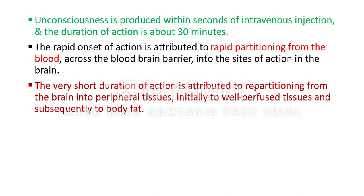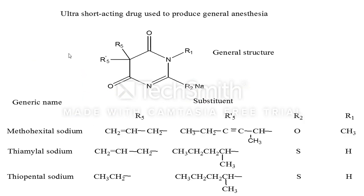The very short duration of action is attributed to repartitioning from the brain into peripheral tissues — initially to well-perfused tissues, and subsequently into body fat tissues. Examples of ultra-short acting injectable barbiturates used to produce general anaesthesia are methohexital sodium, thiamylal sodium, and thiopental sodium.